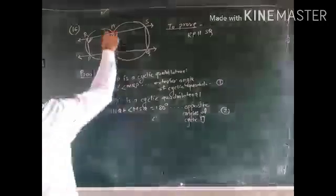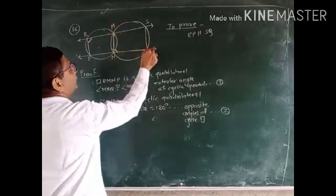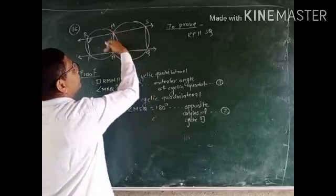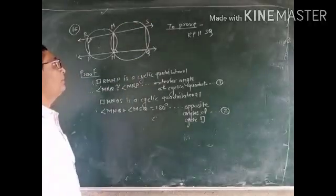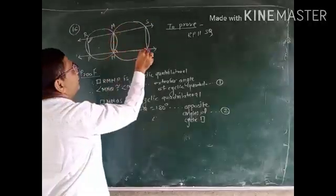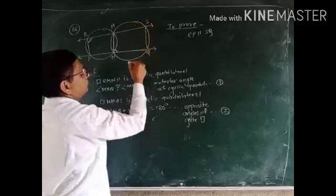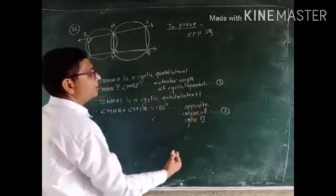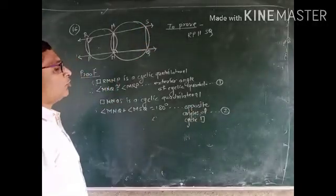Now see, angle MNQS forms a cyclic quadrilateral in the bigger circle. Therefore, angle MNQ plus angle MSQ equals 180, because they are opposite angles of a cyclic quadrilateral.